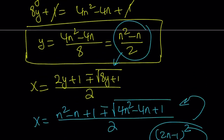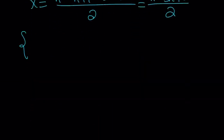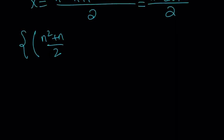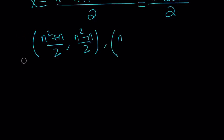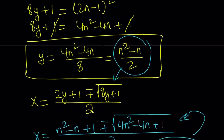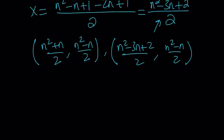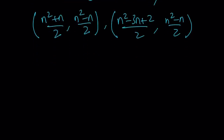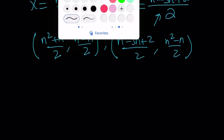Since we have a single y value for these two x values, let's write the results as two ordered pairs. The first solution is x equals n squared plus n over 2, y equals n squared minus n over 2. The second solution is x equals n squared minus 3n plus 2 over 2, y equals n squared minus n over 2. Note that the y value is unchanged since we found y first and used it to find the two x values. If you plug in specific numbers, you'll notice there is an overlap between the solutions. That brings us to the end of Method 1.